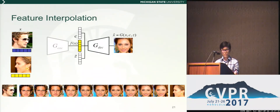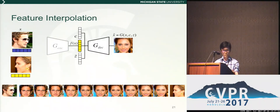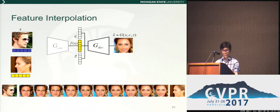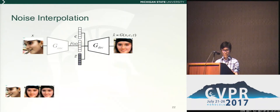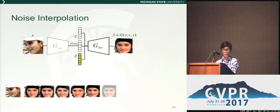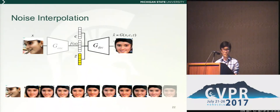As a result, this image shows a smooth transition from a male to a female. The smoothness of the transition shows that the representation space is a meaningful one. By interpolating between two noise vectors, we can also create intra-subject variation in the synthesized images.